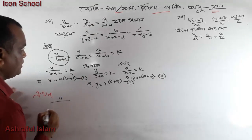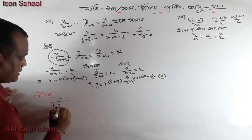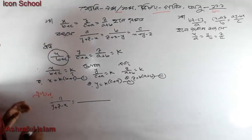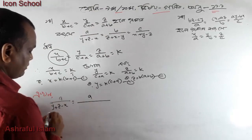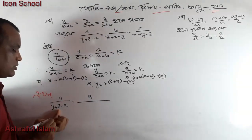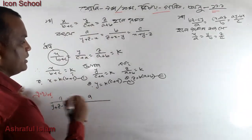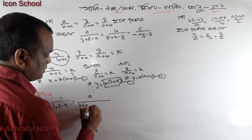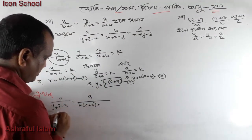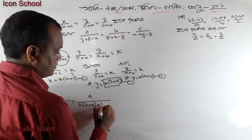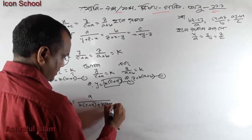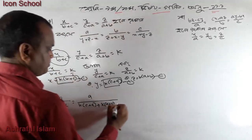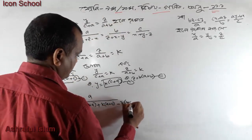This one is y plus z minus x. Look at this one: y' is k into c plus a, z' means k into a plus b, x' means k into b plus c.